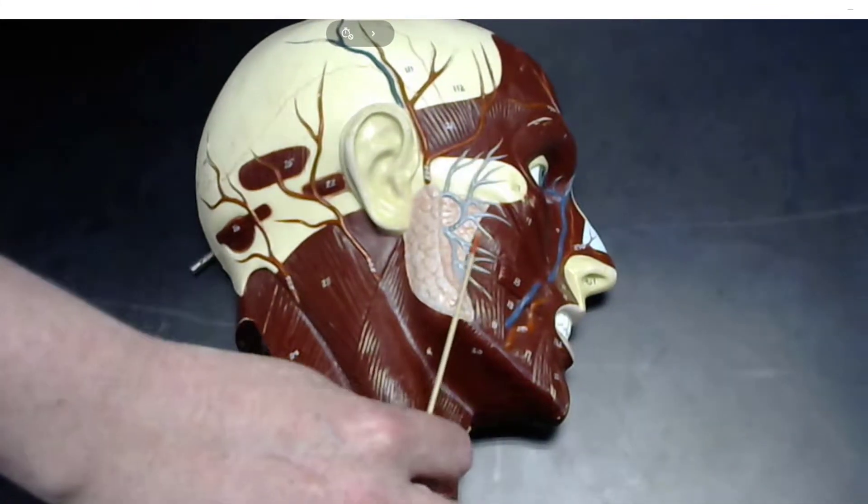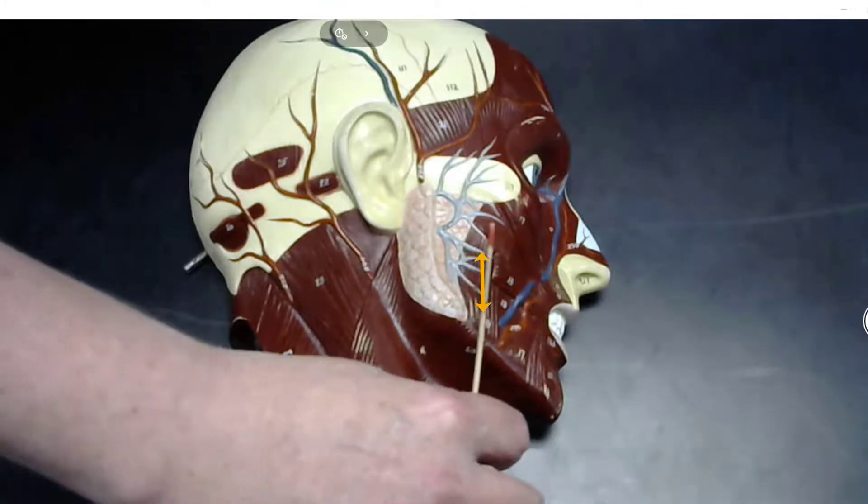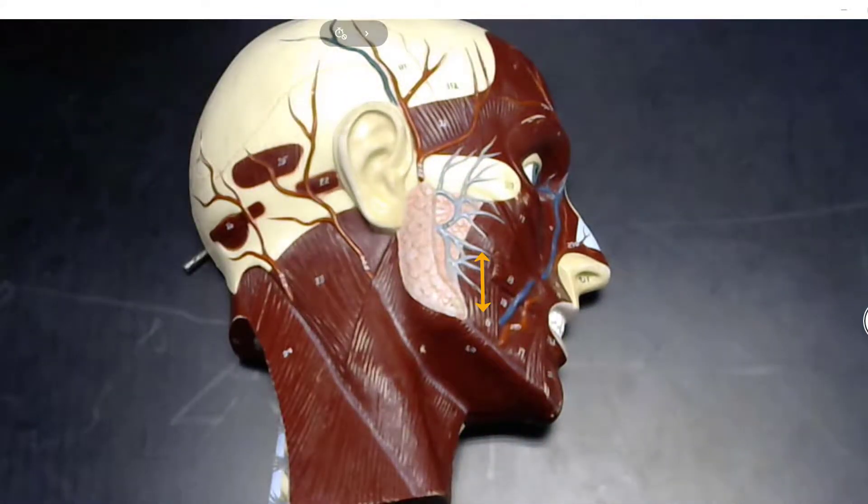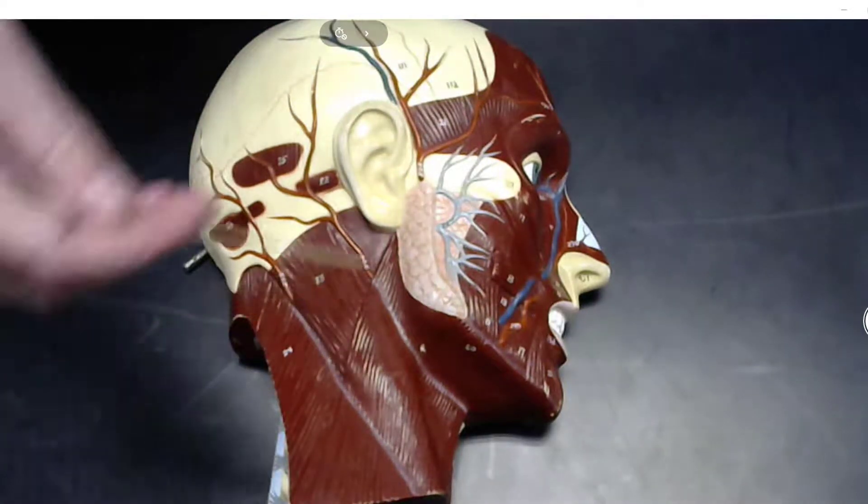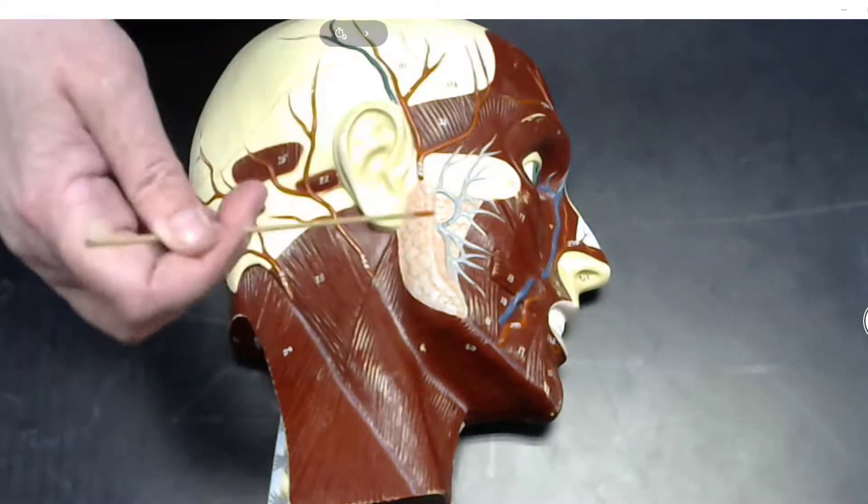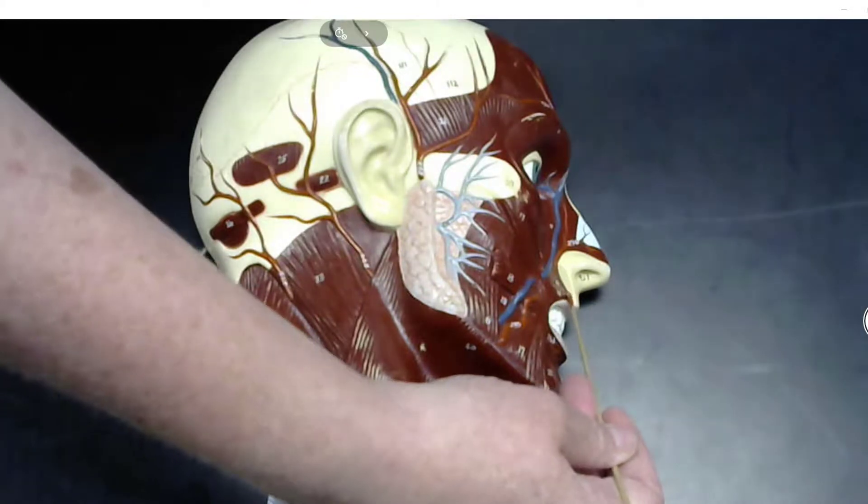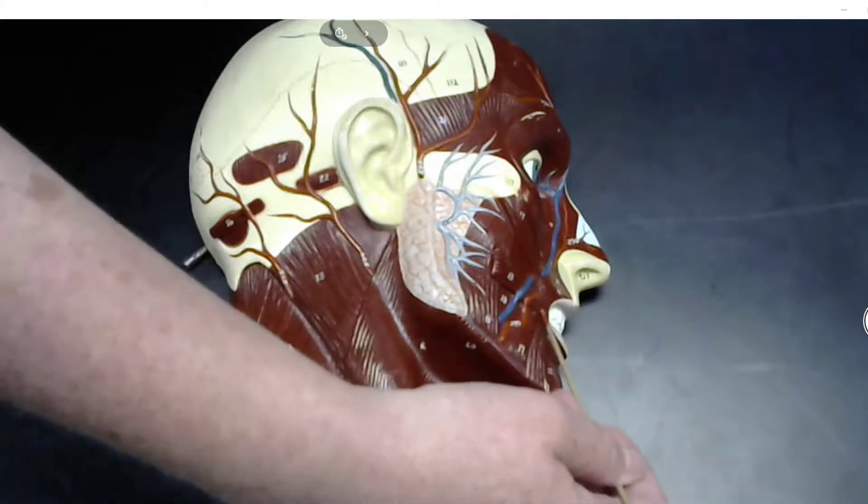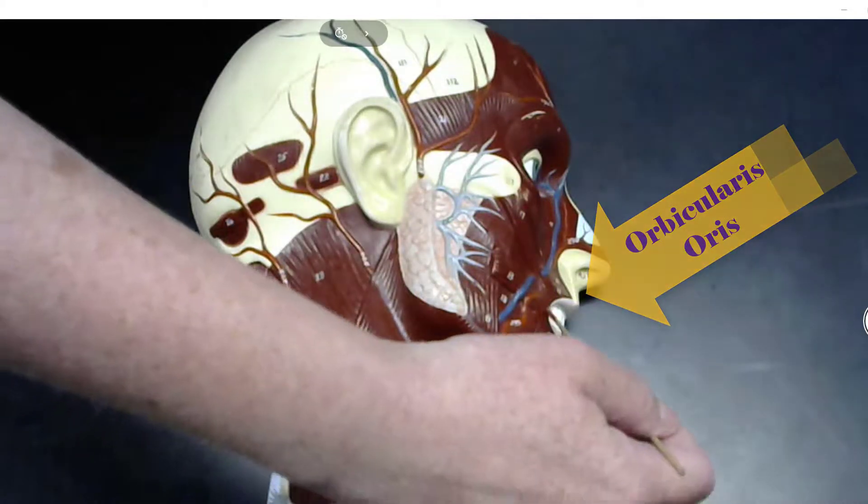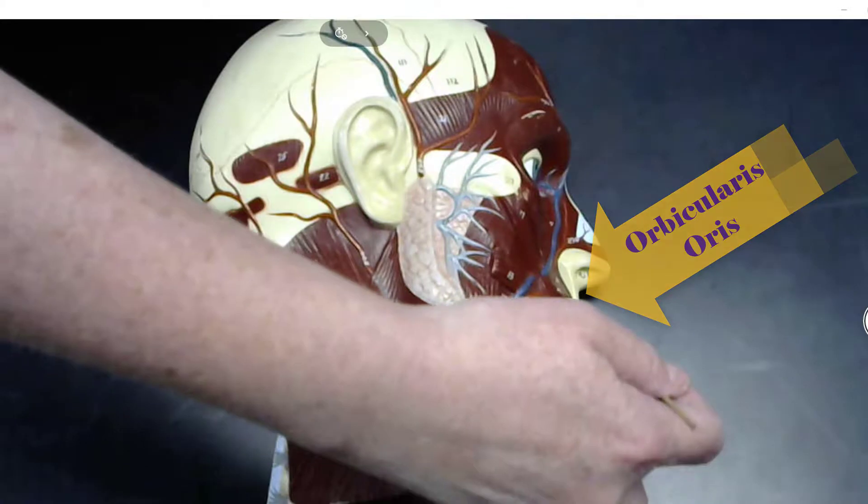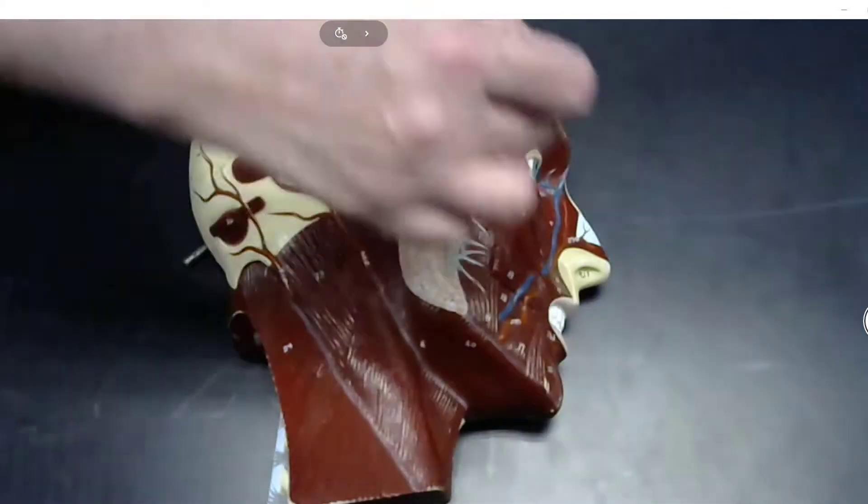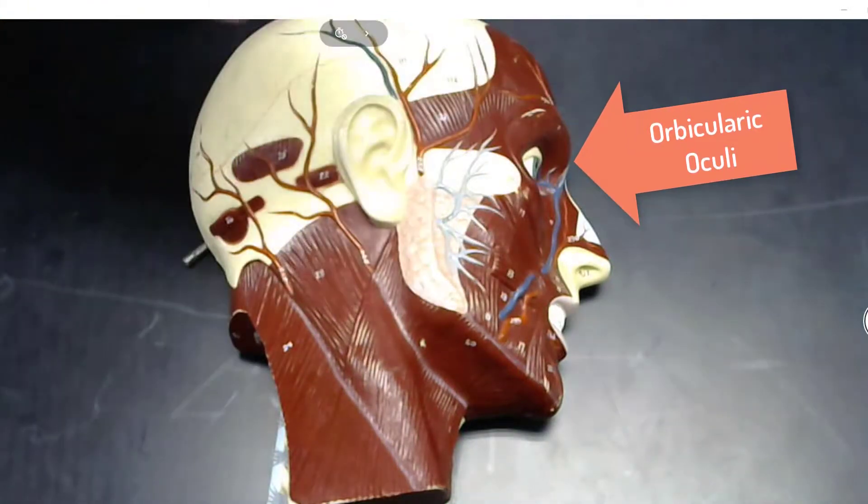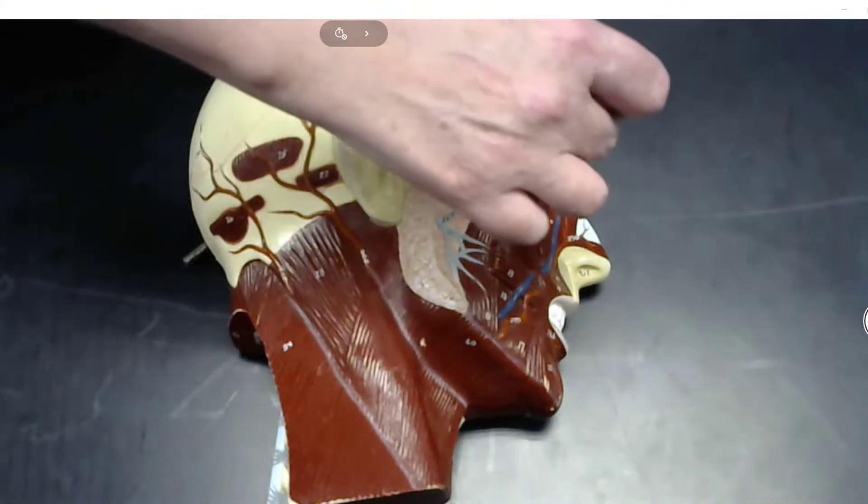When you look at this live, you'll see that the striations are oriented in this fashion. You have two sphincter muscles of your face. You've got one surrounding your mouth—this is the orbicularis oris—and around the eye you have the orbicularis oculi.